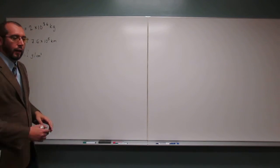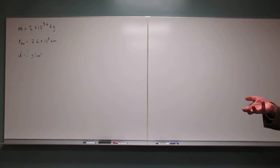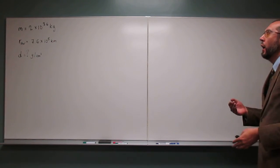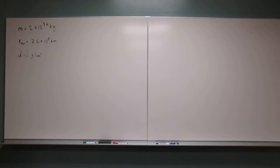Now remember for the density, we need to know mass per unit volume. So in other words, we need to figure out what the volume is of a sphere and how it actually relates to the radius.